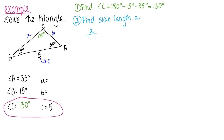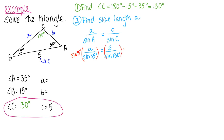Let's find side length a. Put a on top, sine of angle A below, using C as reference since we know everything about C. So a over sine(35°) equals 5 over sine(130°). Multiplying both sides by sine(35°) gives a equals 5 sine(35°) over sine(130°). Plug that into your calculator and you get approximately 3.74.